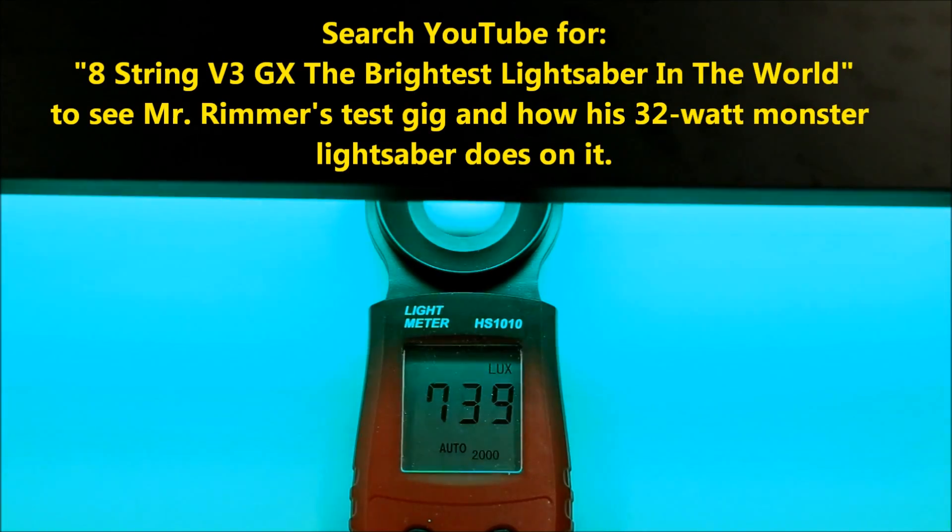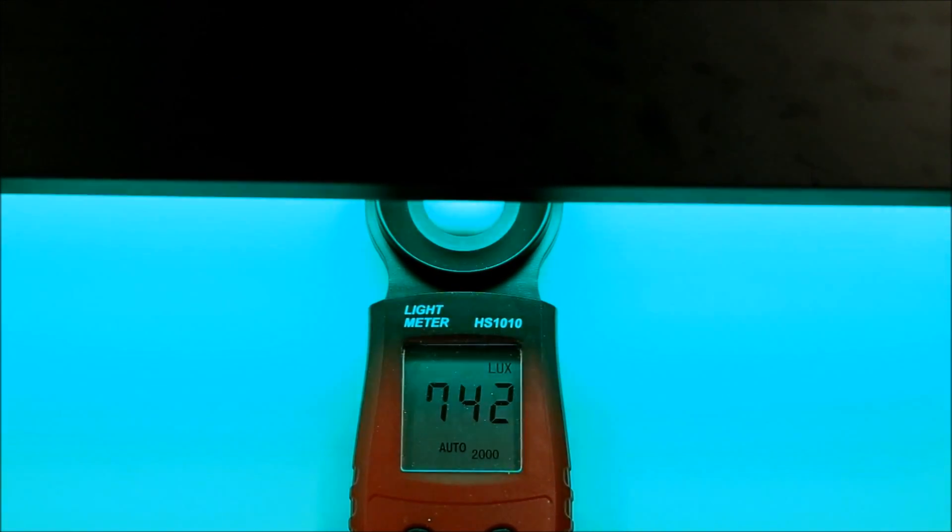His Makoto Psi V3 two-string blade records 1410. The reason two strings don't put out exactly double what a one-string does is that the two strings, because they lay next to each other, interfere with each other, so they're not as optically efficient.